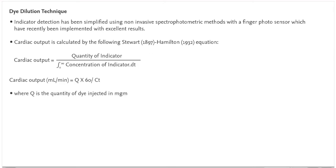Where Q is the quantity of dye injected in milligrams, C is the average concentration of dye in each milliliter of blood for the duration of the curve, and T is the time taken for a single circulation in seconds.